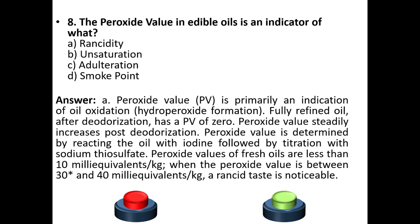Peroxide value is primarily an indication of oil oxidation and hydroperoxide formation. Fully refined oil after deodorization has a peroxide value of zero, and it steadily increases post-deodorization. Peroxide value is determined by reacting the oil with iodine followed by titration with sodium thiosulphate. Fresh oils have peroxide values less than 10 mEq/kg; a rancid taste is noticeable between 30 and 40 mEq/kg.